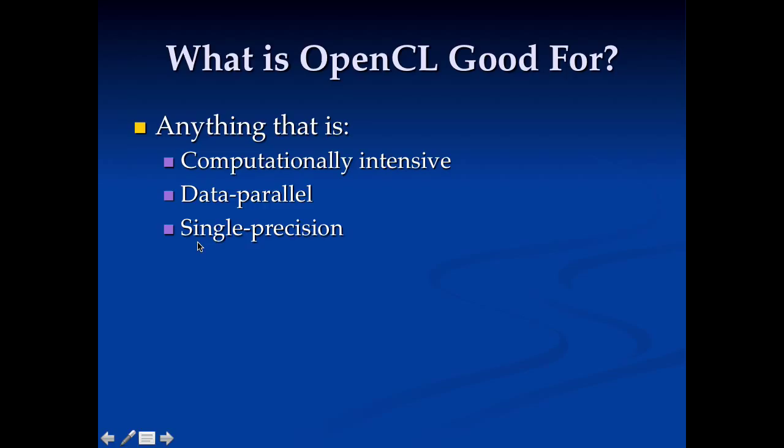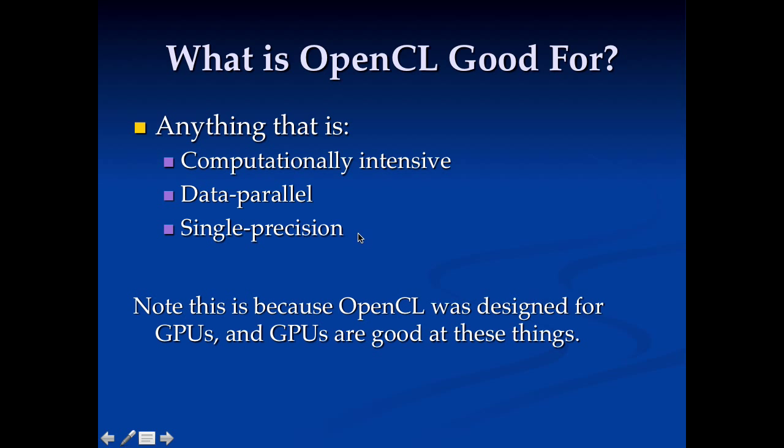And single precision, well, you can get double precision these days, but you get a significant performance loss. So the reason for this is that OpenCL was designed for things GPUs are good at. And this is what GPUs are good at, things that are computationally intensive, data parallel,